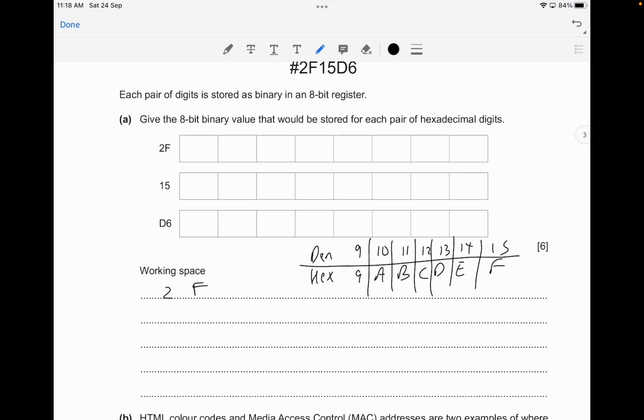You have 8-4-2-1, 8-4-2-1. This is a denary to hexadecimal table I've written down. All the denary numbers from 0 to 9 have hexadecimal values from 0 to 9, but all the denary values from 10 to 15 have hexadecimal digits from A to F.